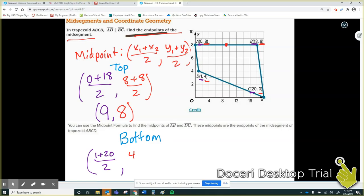20 plus 1 is 21. 21 divided by 2, I get 10 and a half or 10.5. 4 plus 0 is 4. 4 divided by 2 is 2. So 10 and a half, 10 and a half would be something right here, comma 2. This is this point right here.